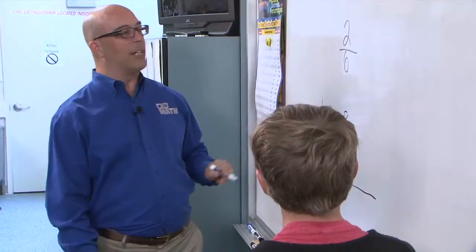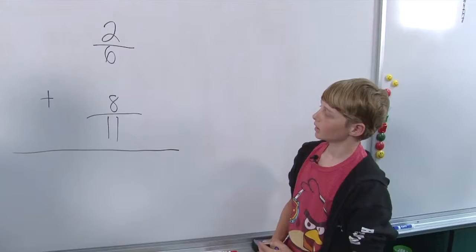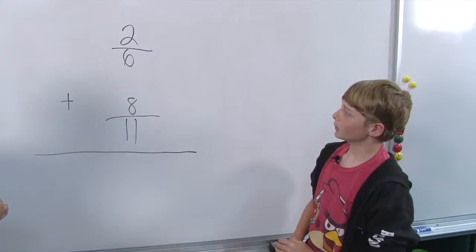Ooh, nicely done. Alright. There we go. Two sixths plus eight elevenths. How are you going to go ahead and do this problem? Well, I would have to find the, oh, what was it called?